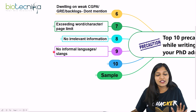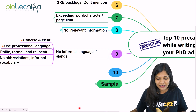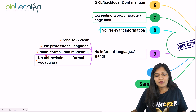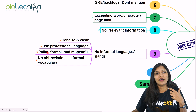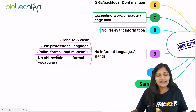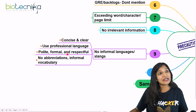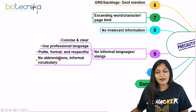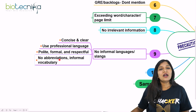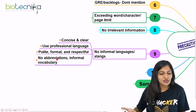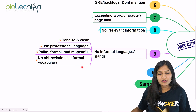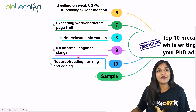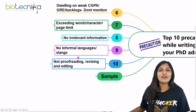The ninth point: no informal language or slang. Write your SOP professionally. Make it concise and clear, use professional English, be polite, and ensure your words represent respect and formality. It should not demean anyone. Do not write abbreviations or informal vocabulary like words used on social media — never use informal vocabulary in your SOP.